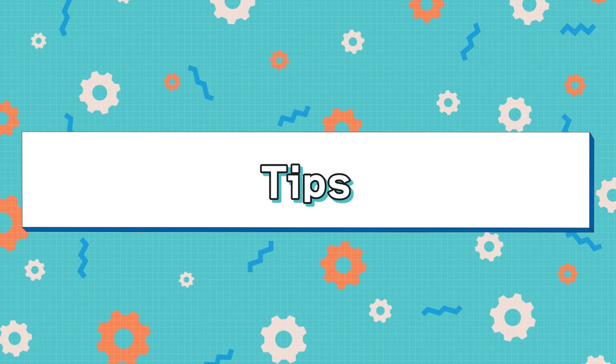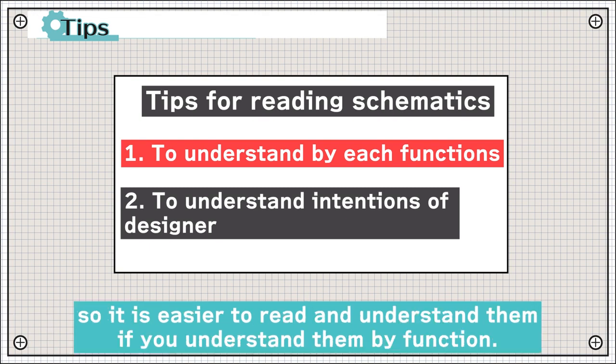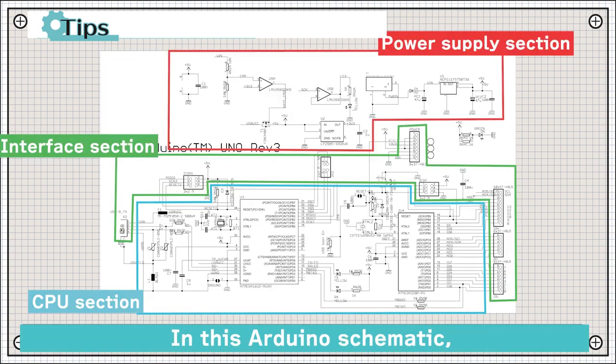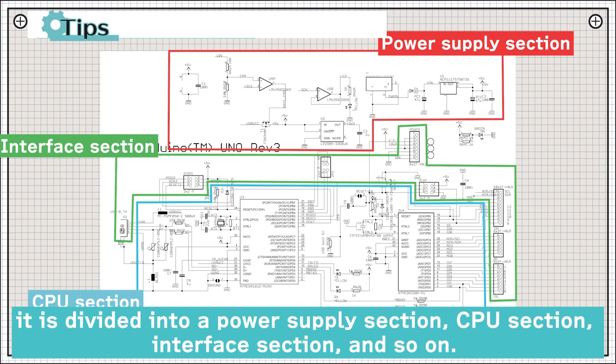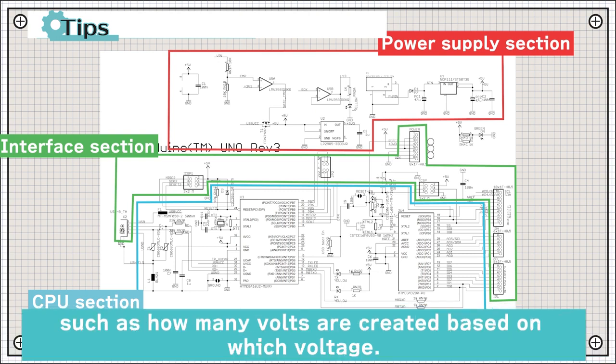Finally, just two little tips for reading schematics. First, schematics are often grouped by functions to some extent, so it is easier to read and understand them if you understand them by function. In this Arduino schematic, it is divided into power supply sections, CPU section, interface section, and so on. For example, if you look at the power supply section, you can focus on the flow of the power supply, such as how many volts are created based on which voltage.